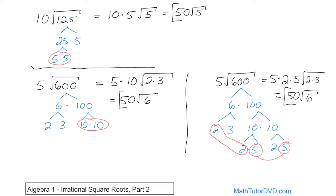Sometimes students are confused about whether to stop when they find a pair or keep going to the bottom of the tree. The truth is, it doesn't matter. As long as you do it correctly without making multiplication errors, you're going to get the same answer either way, as long as you follow the technique.